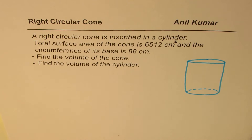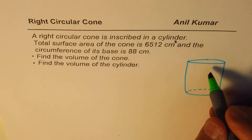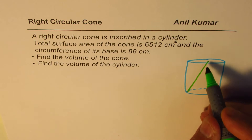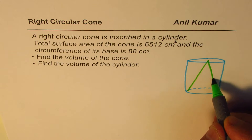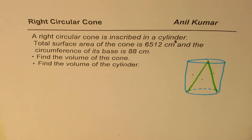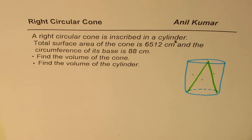Within the cylinder we have a cone inscribed. Now, do you know how the volumes of both are related? Volume of cone is one-third the volume of cylinder, since we can fit three cones in it. So basically in this question, even if we find the volume of the cylinder, we can find the volume of the cone — the multiplier is one-third. That's important to understand.